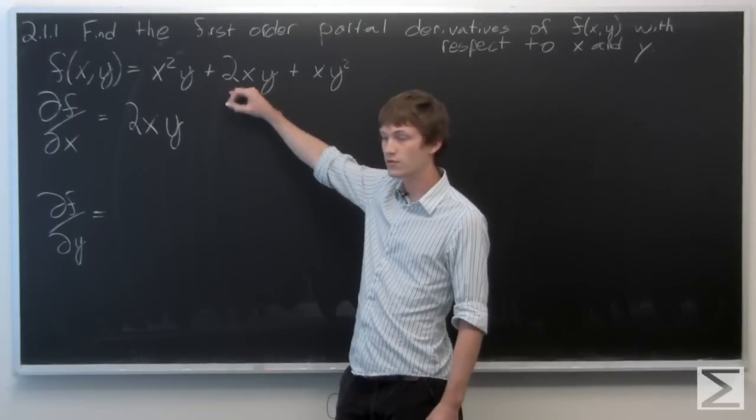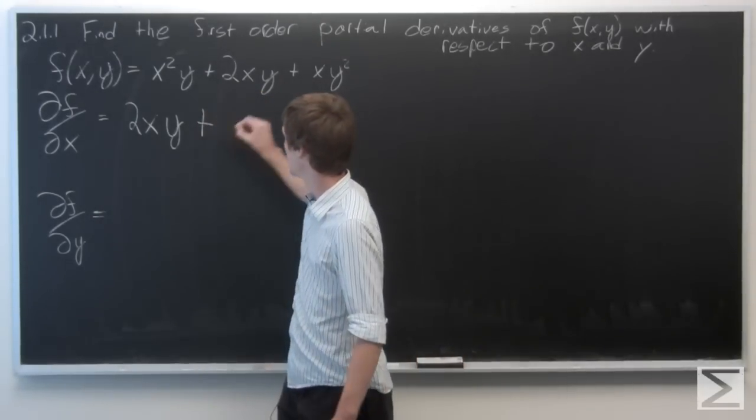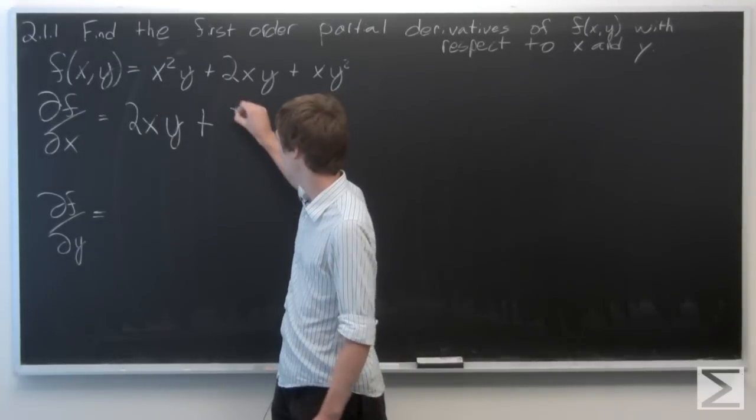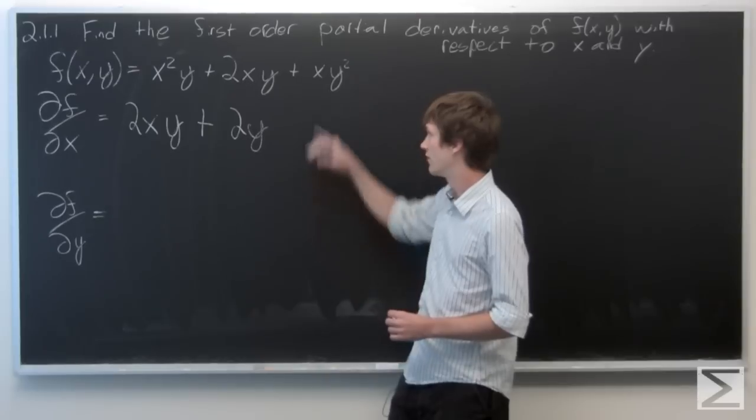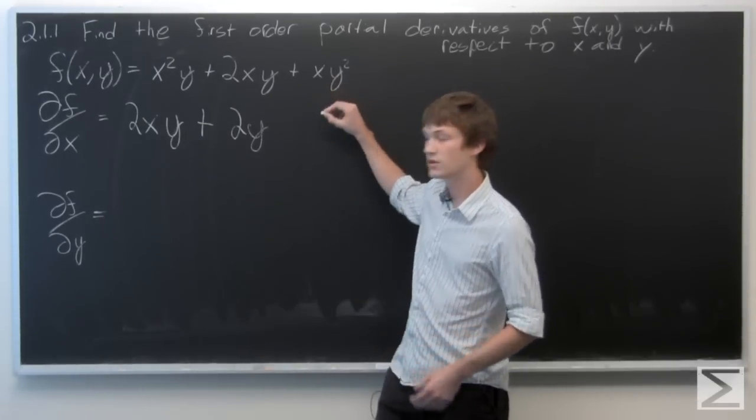And the derivative of 2x is just 2, and then y is constant. And then the derivative of x is just 1, so we just get y².